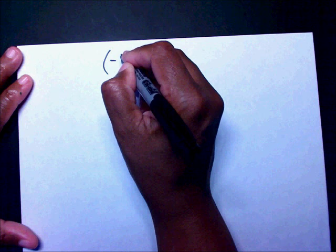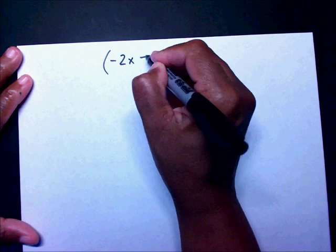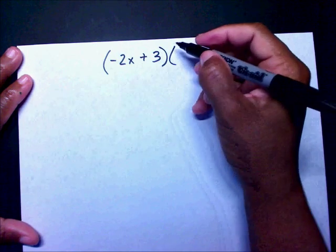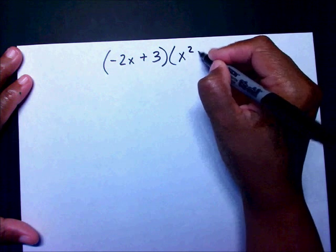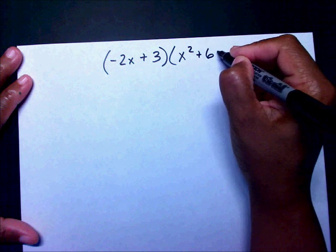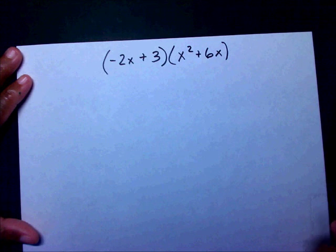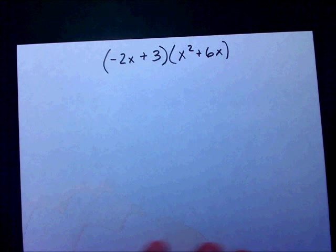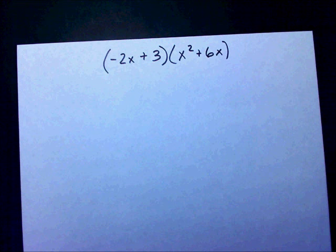Now let you try one: negative 2x plus 3 times x squared plus 6x. Please pause the video and work the problem the way you prefer, and then I'll work it both ways.